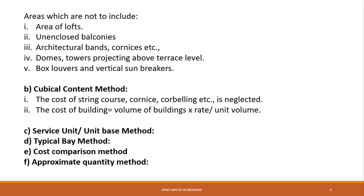For example, if you are constructing a bungalow in Ratnagiri district and there is a similar existing bungalow in that locality, you take the cost of that existing bungalow, divide it by its plinth area to get the rate per square meter, and then multiply that rate by your proposed building's plinth area to get the approximate cost.